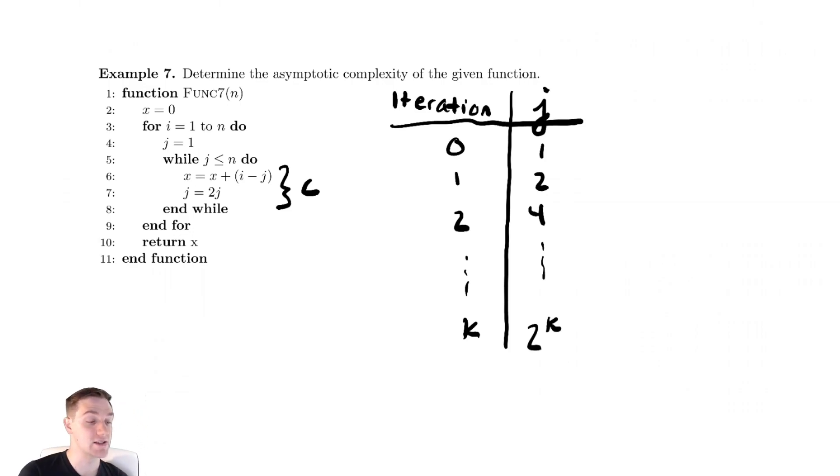When does this terminate? Well this stops when our expression for j, 2 to the k, is equal to the stopping condition of the while loop which is n.